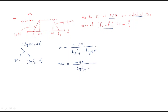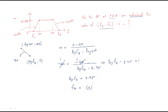Since log 900 ≈ 2.95, we get log fH = 2.95 + 1 = 3.95. Therefore fH = 10^3.95 ≈ 9000 Hz. So the higher frequency is 9000 Hz.